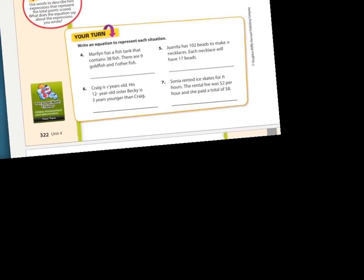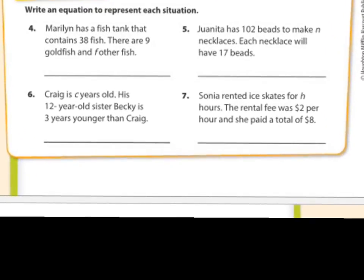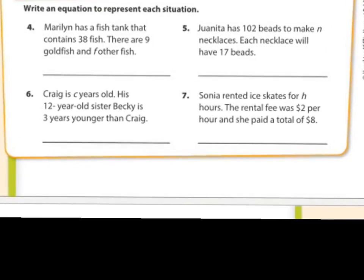Now let's look at number four. Marilyn has a fish tank that contains 38 fish. Okay, so that's like your total. 38 fish. There are 9 goldfish and F other fish. Okay, so you can say 38 total is equal to the 9 goldfish plus those other fish. Okay. You don't have to solve it. We're just writing the equation.